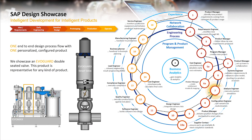In step 7, the systems engineer wants to automatically create a system simulation model based on their SysML definition to verify the parameters defined in the product requirements. Furthermore, they want to connect sensor data from existing products to the simulation model in order to improve the overall system design based on real-time data.